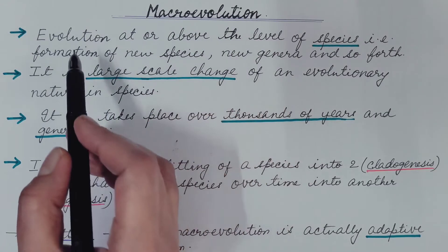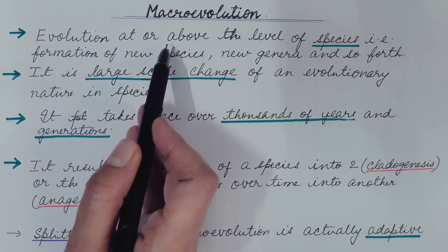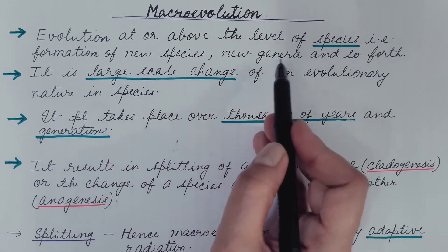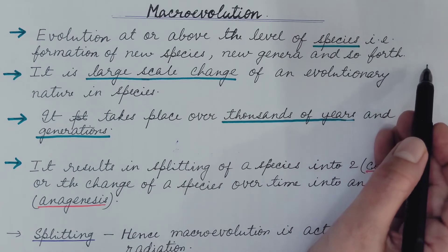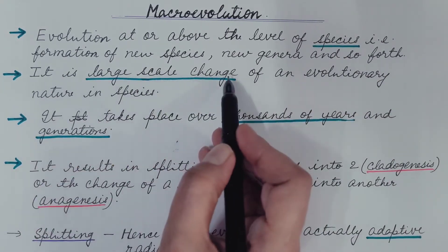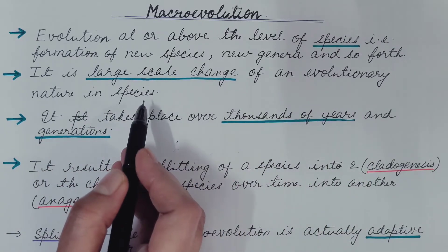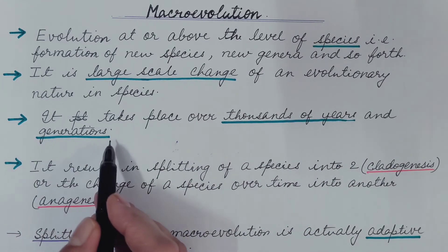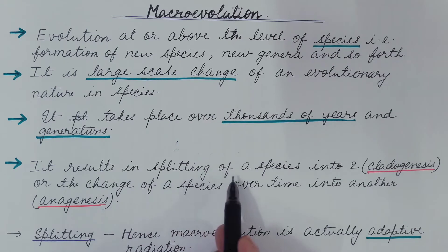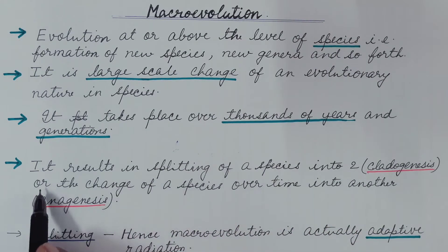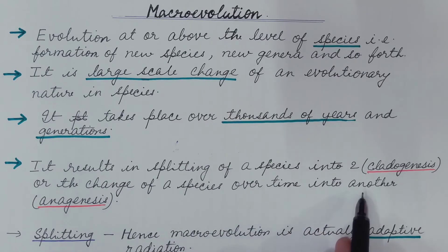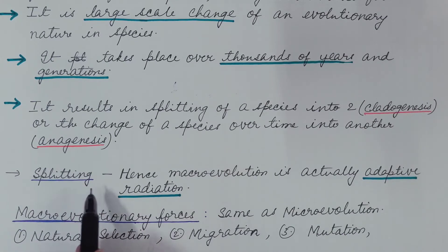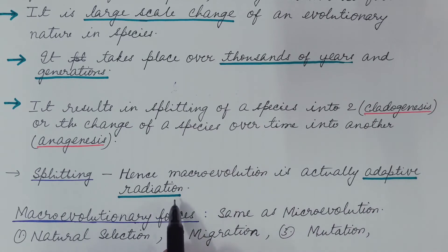Now let us see macroevolution. When evolution takes place at or above the level of species that is formation of new species, new genera and so forth, then it is known as macroevolution. It is large scale change of an evolutionary nature in species. It takes place over thousands of years and involves generations. It results in splitting of a species into two known as cladogenesis or the change of a species over time into another known as anagenesis. And because of the splitting of the species, macroevolution is actually known as adaptive radiation.